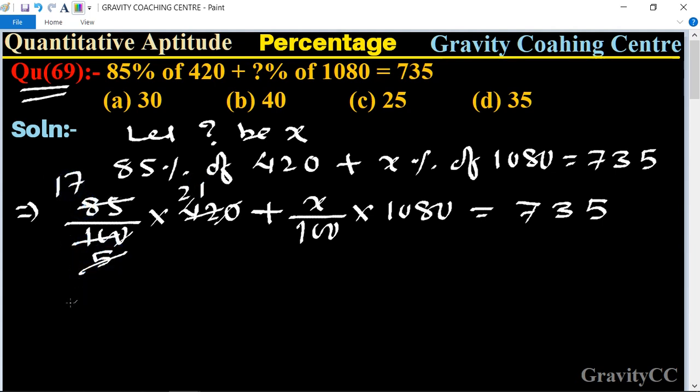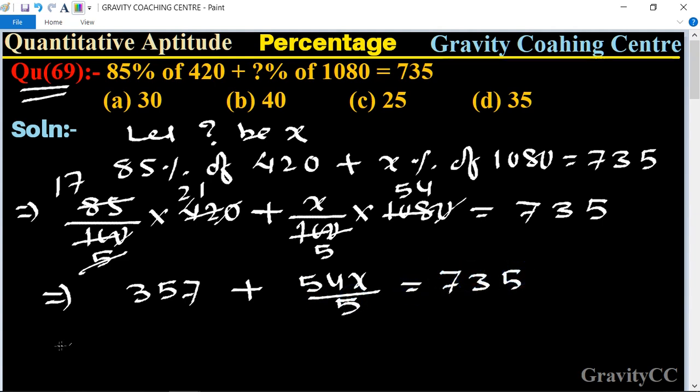This implies that 17 into 21 is equal to 357 plus, here we cancel the zeros and divide by 2, getting 54 and 5, so 54x upon 5 is equal to 735.